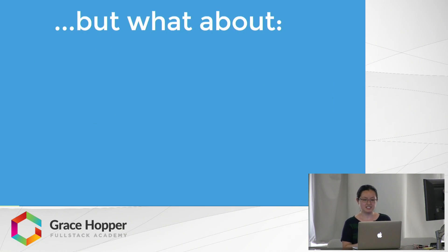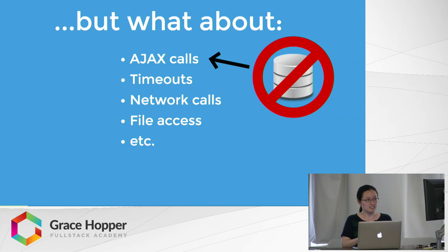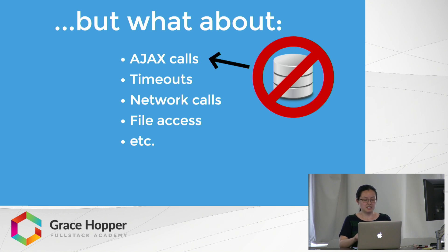Unit tests are great and we want them everywhere. But what if we have functions that have outside dependencies, like AJAX, set timeouts, network calls, or file access calls? If we had an AJAX call in our function, we'd need a server that provides responses to our requests. But if we don't have access to the server or there's some issue with the database, we want our tests to be isolated from the state of the network. We could set up a test database, but that would require extra work and generally make our lives harder as developers.